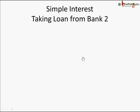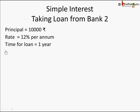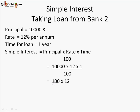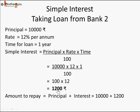Now let's do the same for Bank 2, which is offering 12% per annum. Time and principal remain the same; only the rate of interest changes. Simple interest = 10,000 × 12 × 1 ÷ 100 = 1,200 rupees. So the amount to repay is principal plus interest: 10,000 + 1,200 = 11,200 rupees. In the case of Bank 1 the interest was 1,000 rupees, so Sukram pays 11,000 rupees; here for the same 10,000 rupees he has to pay 11,200 rupees.